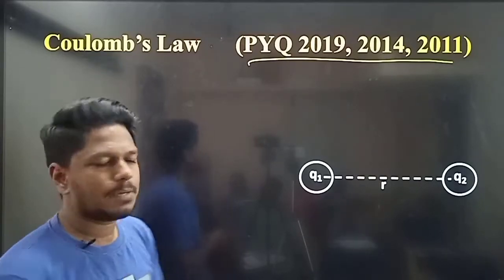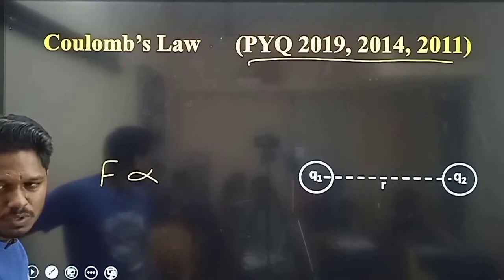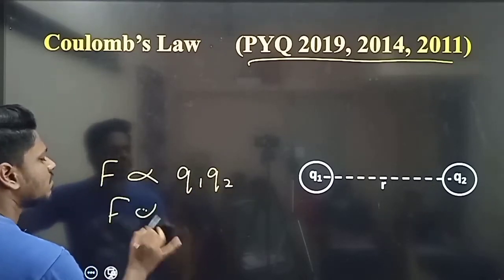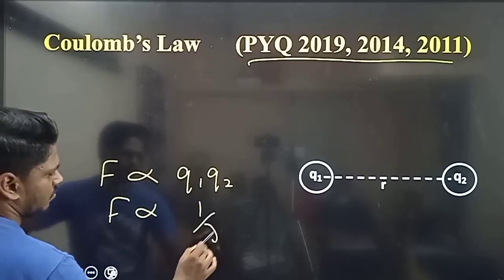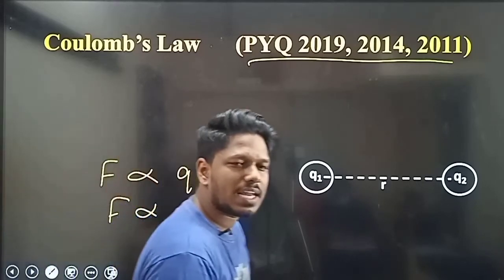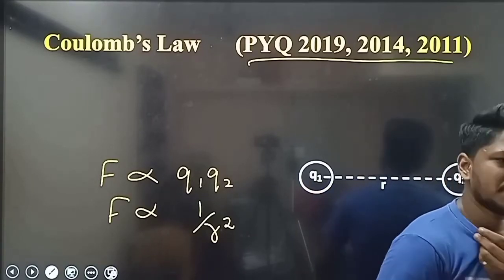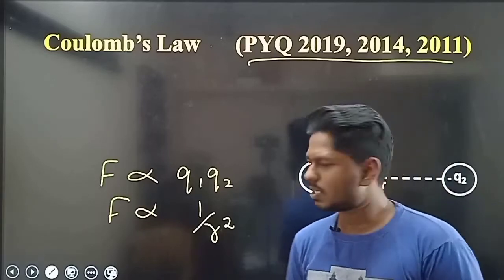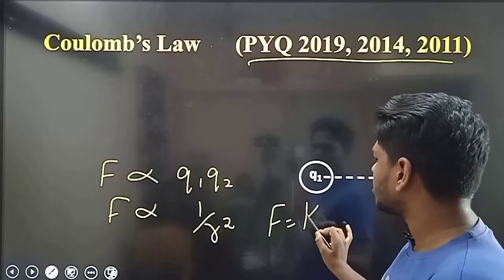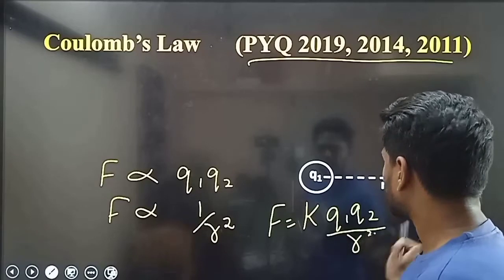The force is directly proportional to the product of the charges, and inversely proportional to the square of the distance. Similar to gravitation — force is directly proportional to the product of the masses and inversely proportional to r². The formula involves a constant K, and charges Q1, Q2 over R squared.